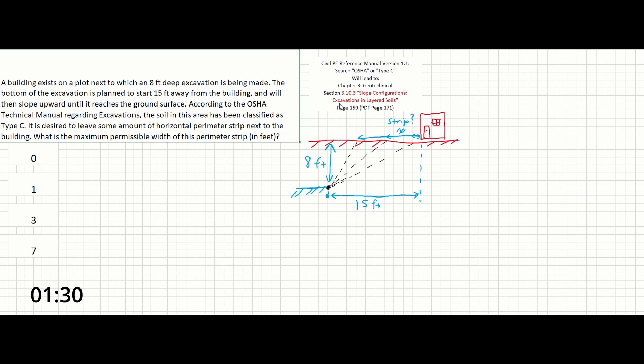The problem doesn't mention anything about multiple layers of soil, so we can assume that there's only one layer. As we can see in our table, our excavation for Type C soil is less than 20 feet deep, and the slope requirements are 1.5 horizontal to 1 vertical.